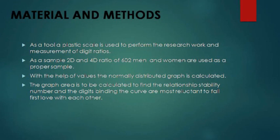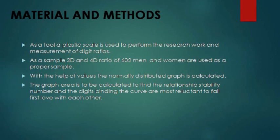For materials and methods: a plastic scale is normally used to perform the research work and measurement of digit ratios. As a sample, the 2D to 4D ratio of 602 men and women is used. With the help of these values, the normally distributed graph is calculated. The graph area is calculated to find the relationship stability number, and the digits finding the curve are most reluctant to fall in first love with each other.